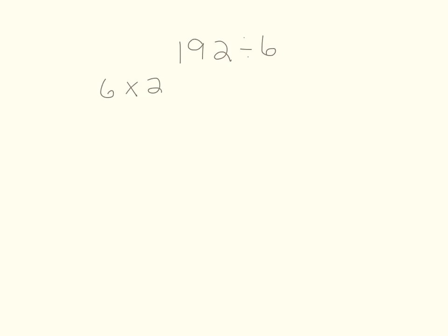Let's look at another problem: 192 divided by 6. I need to get as close to 192 as possible by using easy multiplication facts multiplied by the divisor of 6. I'm going to start with 6 times 20, which gives me 120. Then I'm going to do 6 times 10, which gives me 60. I now have 180 out of 192, so I need 12 more.